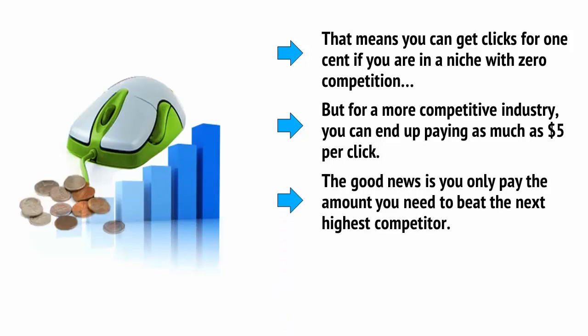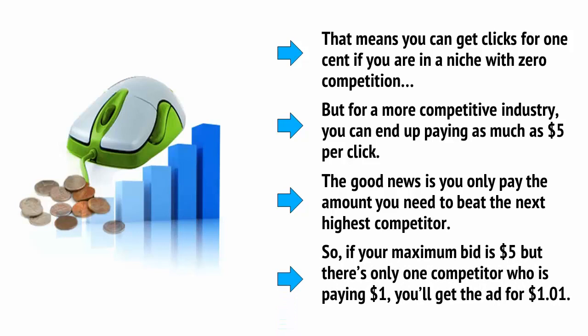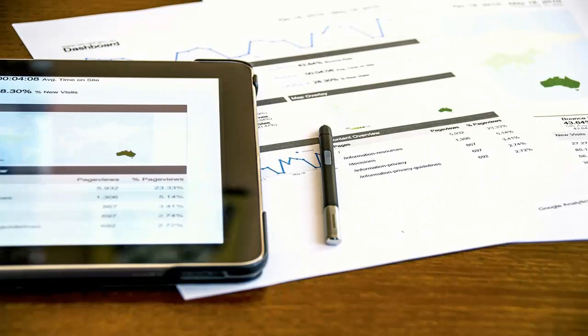The good news is, you only pay the amount you need to beat the next highest competition. So if your maximum bid is $5, but there's only one competitor who's paying $1, you'll get the ad for $1.01. As well as setting how much you're willing to pay — which is known as your minimum bid — you can also set how much you're willing to pay per week or per month. This is your budget, and by setting this, you can ensure that you never spend more cash than you have.